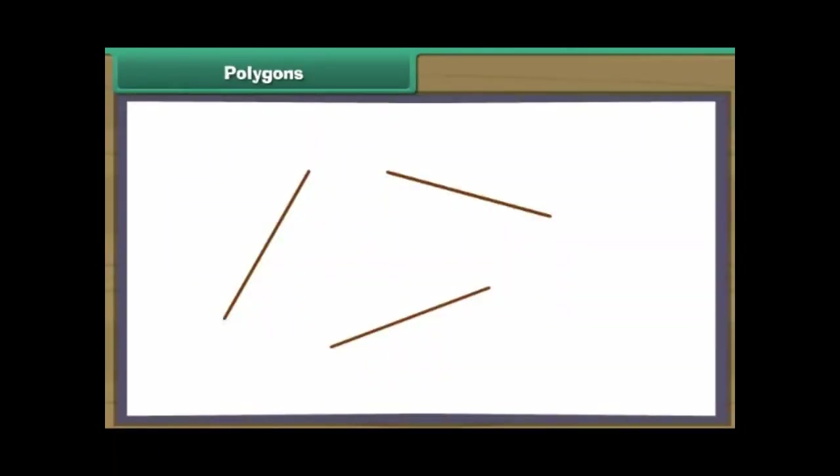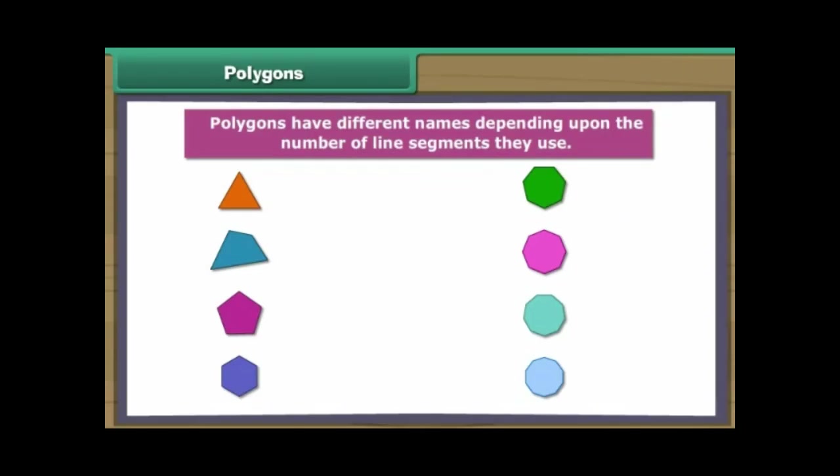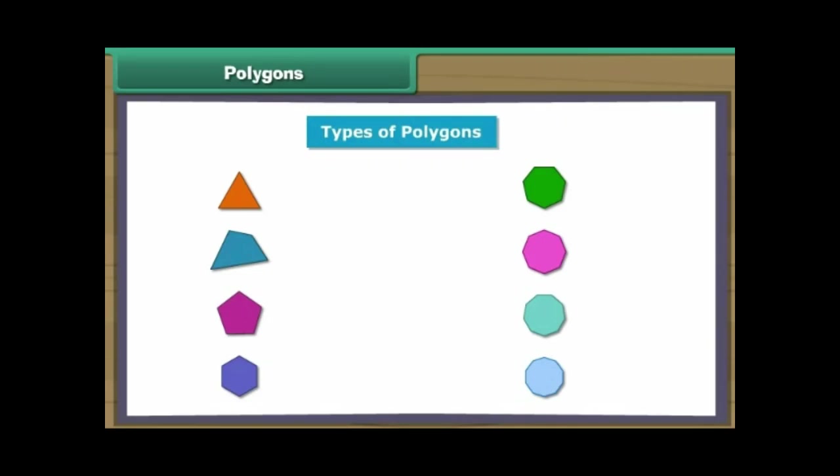We can form different shapes by enclosing them with line segments on all sides. Such closed figures are known as polygons. Polygons have different names depending upon the number of line segments they use. Here, we look at the following types of polygons.